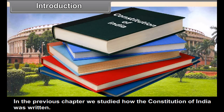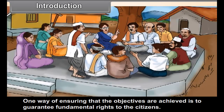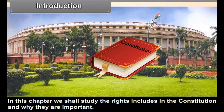Chapter 6: Fundamental Rights and Duties. In the previous chapter, we studied how the Constitution of India was written. We also studied the main objectives of the Constitution. One way of ensuring that the objectives are achieved is to guarantee fundamental rights to the citizens. In this chapter, we shall study the rights included in the Constitution and why they are important.